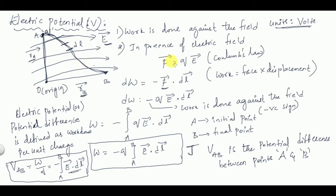The force required is given by QE from Coulomb's law, and work done equals force into displacement. Considering the displacement as dL for a small length, the total length will be RB − RA. So W = −Q · Ē·dL̄, and hence the total work W = −Q ∫ Ē·dL̄.